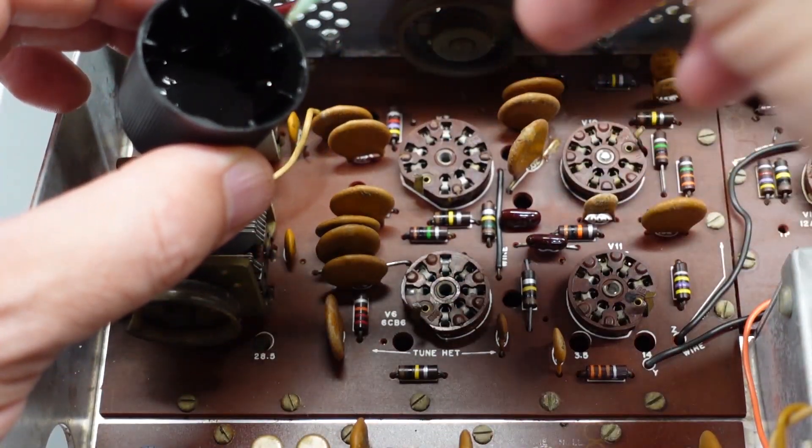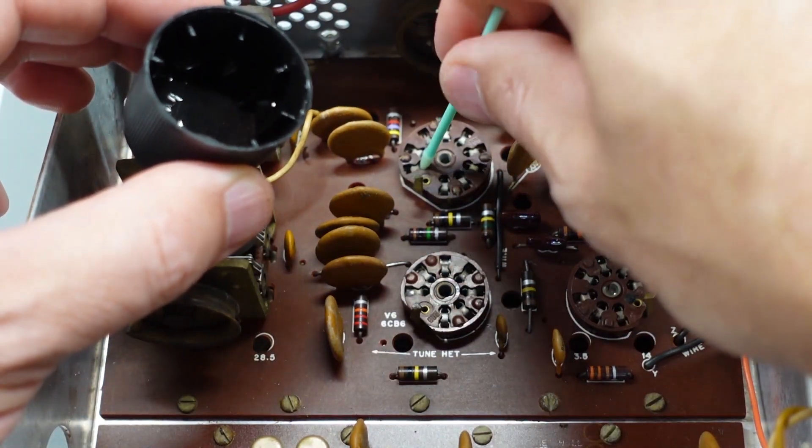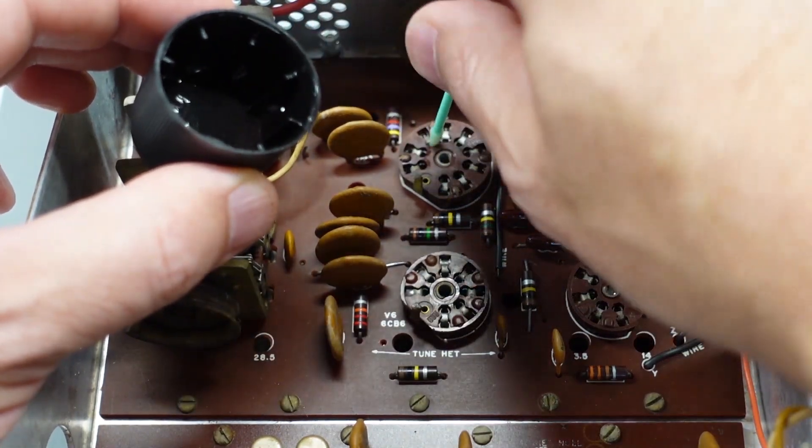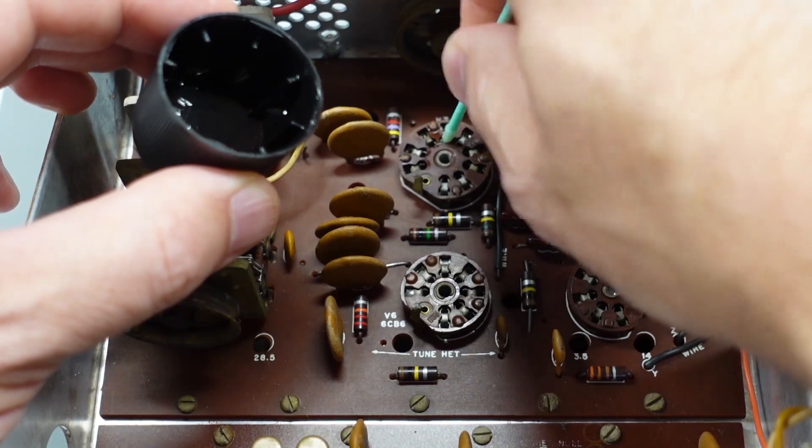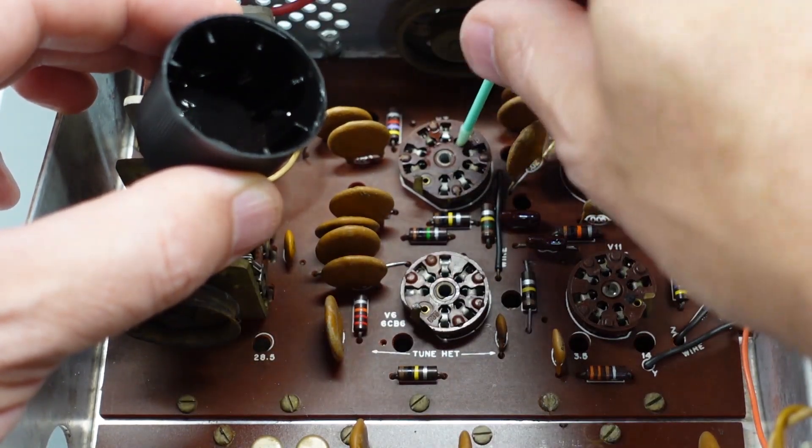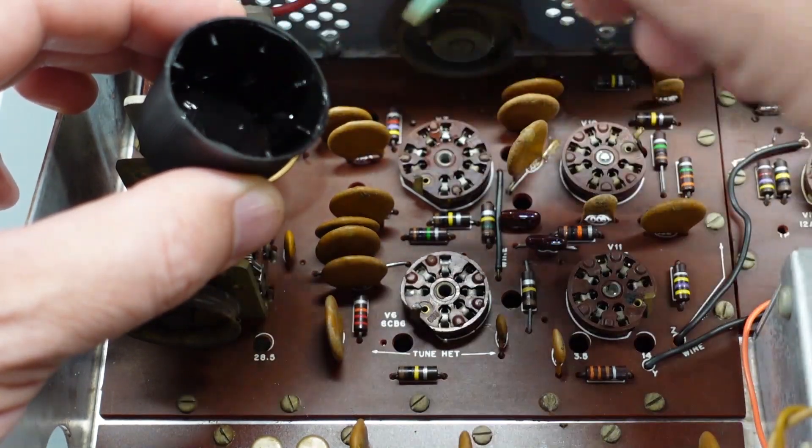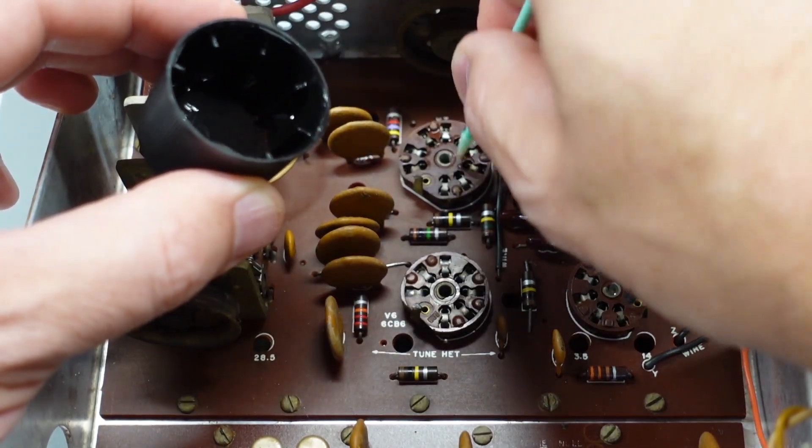Back to the chassis. The tube sockets need some attention too. In this case, it's all about oxidation removal. I'm not a fan of just spraying things with contact cleaner or Deoxit. That just creates a big mess. What I do instead is use these tiny sponge sticks soaked in Deoxit to apply it individually to each contact.